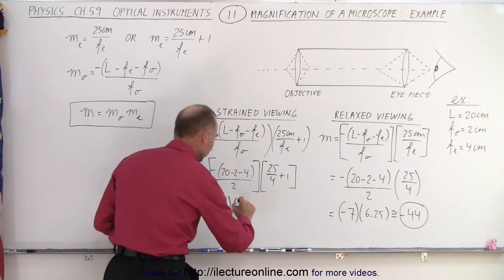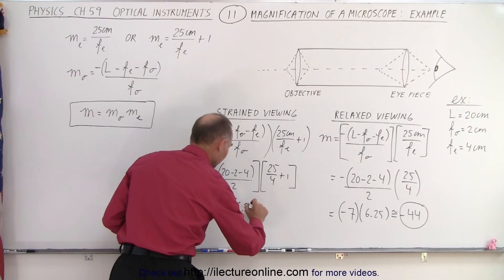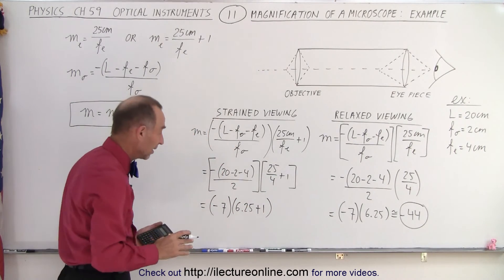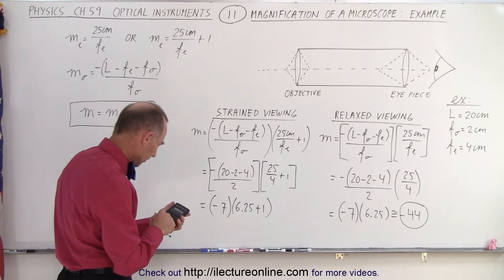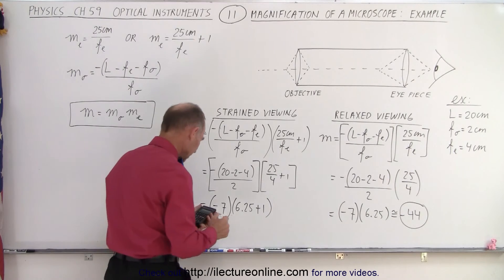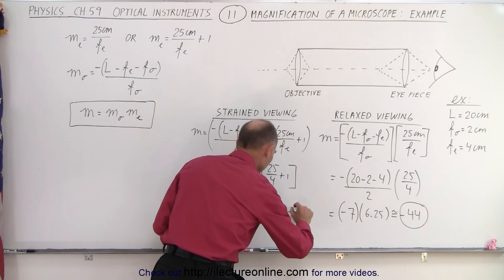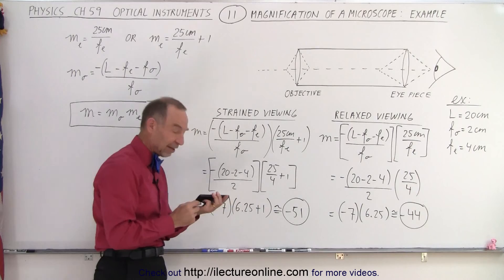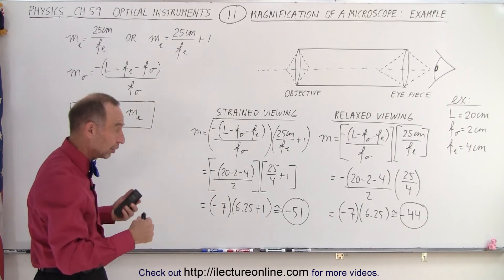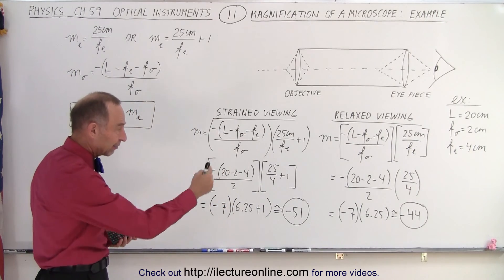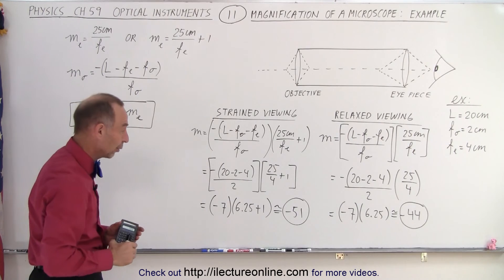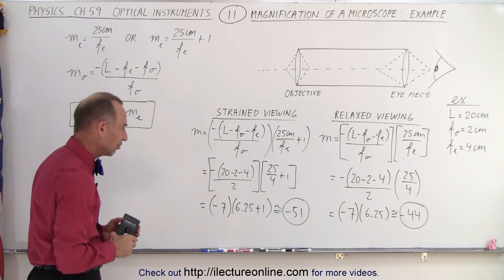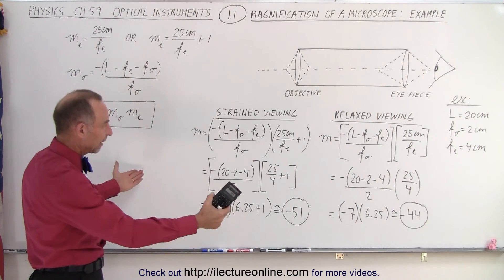Multiply minus 7 times 6.25 plus 1 — the plus 1 is due to strained viewing — so now we have 7 times 7.25, giving approximately minus 51. You can see that the magnification depends on how you look through the microscope: relaxed viewing gives minus 44, strained viewing gives minus 51.